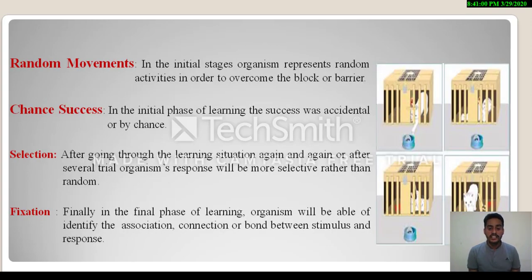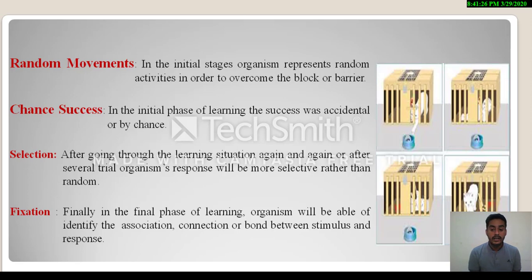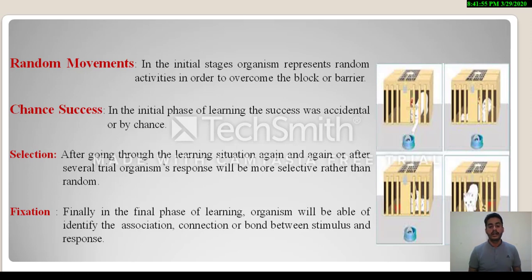Random moments: in the initial stages, the organism represents random activities in order to overcome the block or barrier. As soon as Thorndike placed food in front of the cat, it started doing random activities to attain the food. According to Thorndike, in initial phases when any organism is exposed to a stimulus, it performs random activities to overcome that situation or barrier.